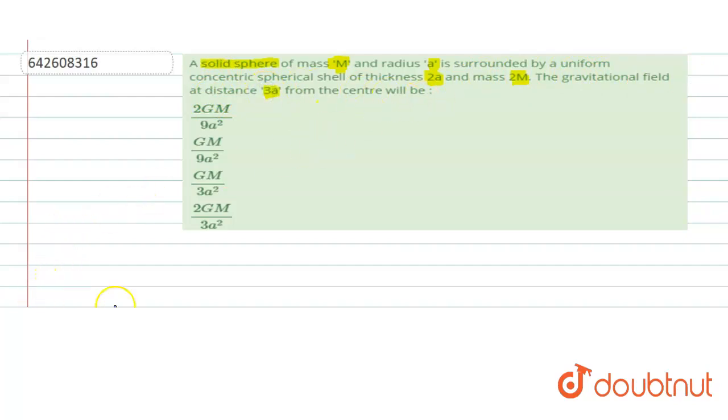Let's understand the situation. We have a solid sphere which has mass M, and surrounding it we have a concentric spherical shell of thickness 2a and mass 2M. So that means it is surrounded by another sphere.